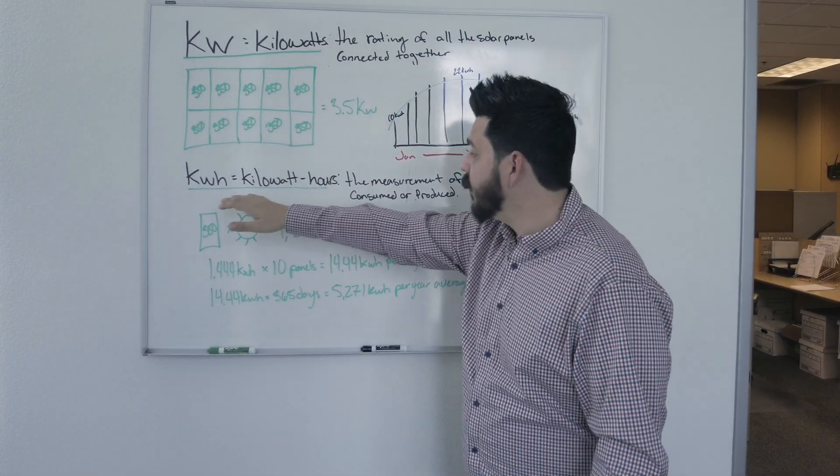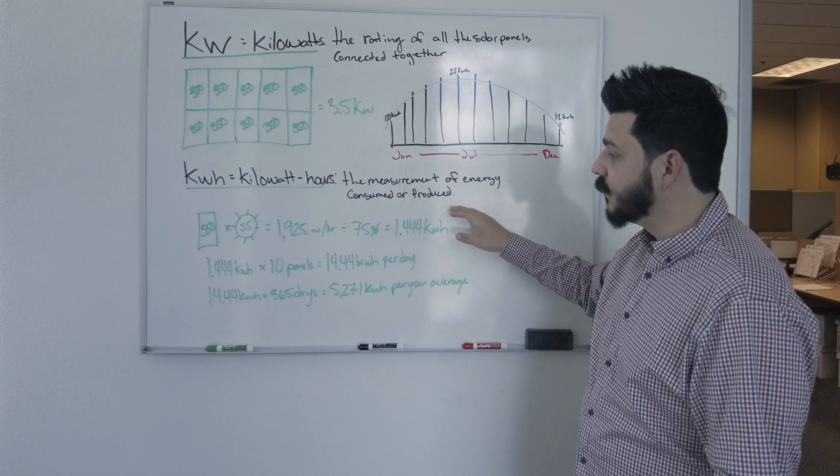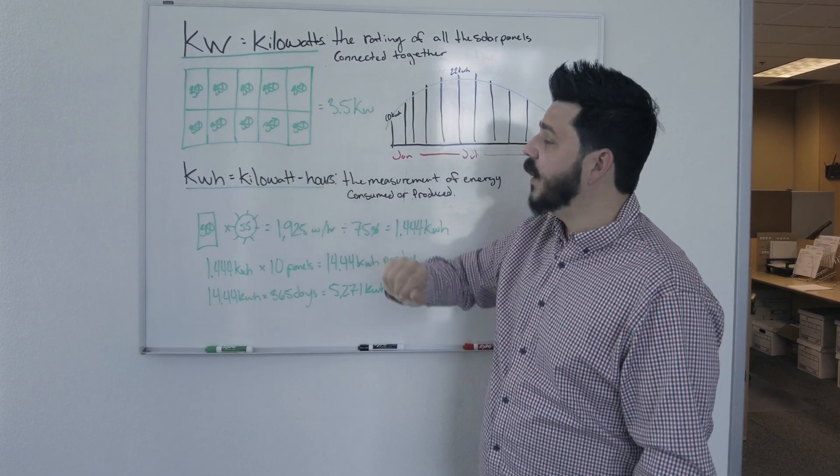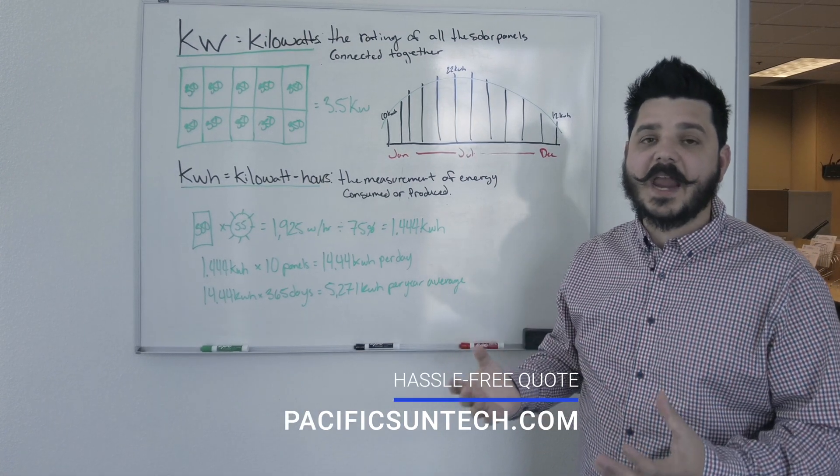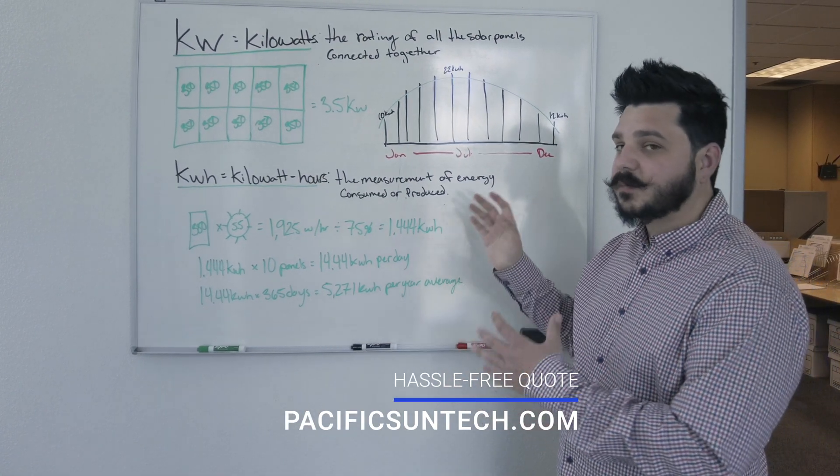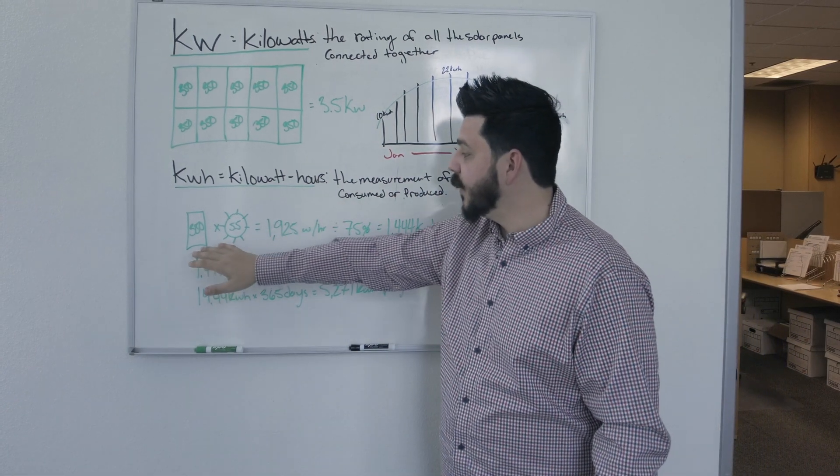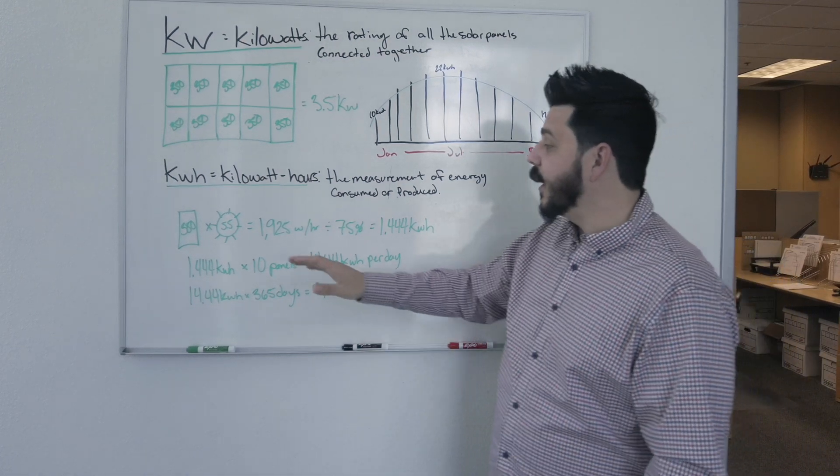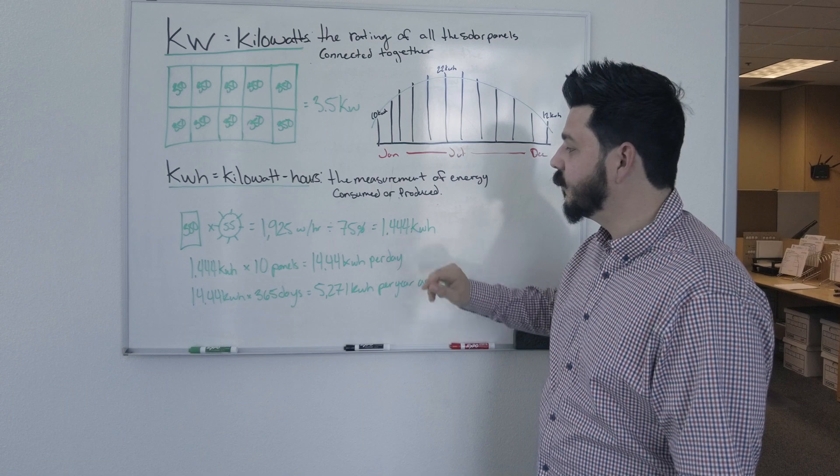Kilowatt hours is the measurement of energy consumed or produced. Now to figure out how much a solar panel will produce, there's a lot of variables. On our bids, we only really give you the annual production, and I'm going to explain that a little later with this chart. But for right now, I'm going to break down with some very simple math how much power a solar panel would produce for you per day.